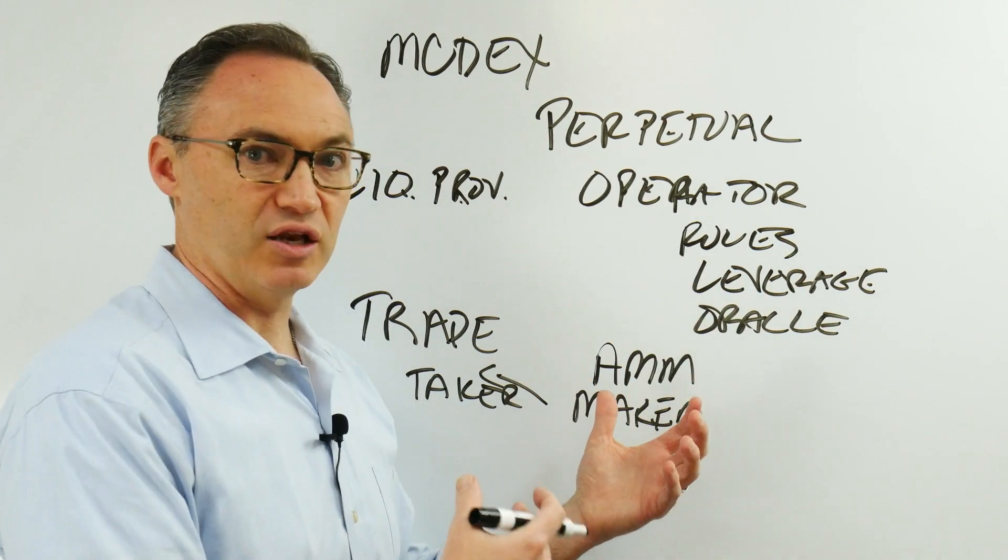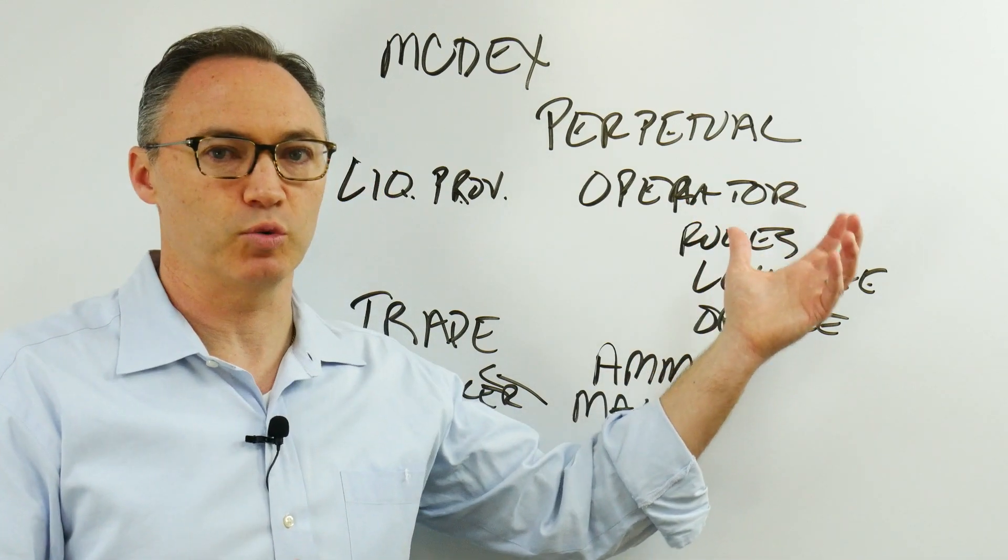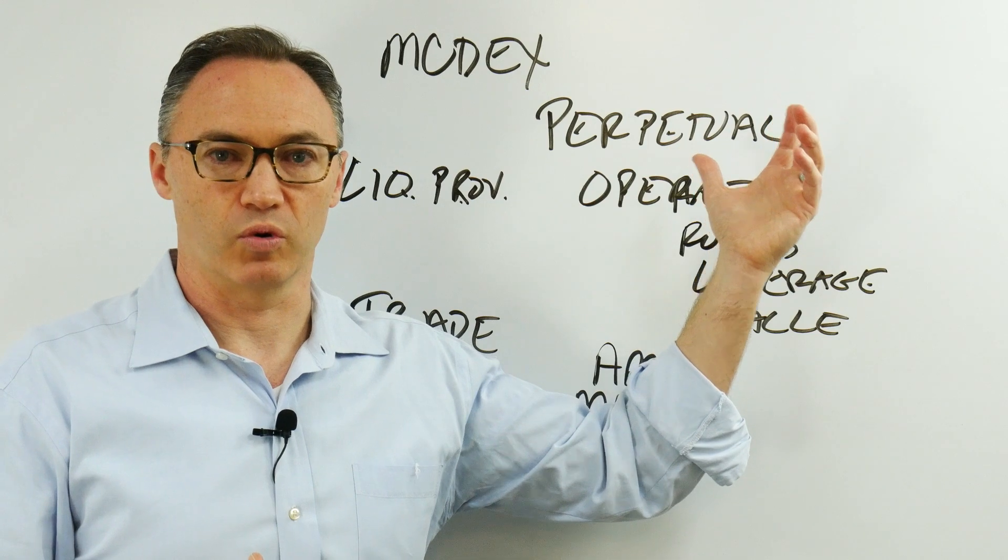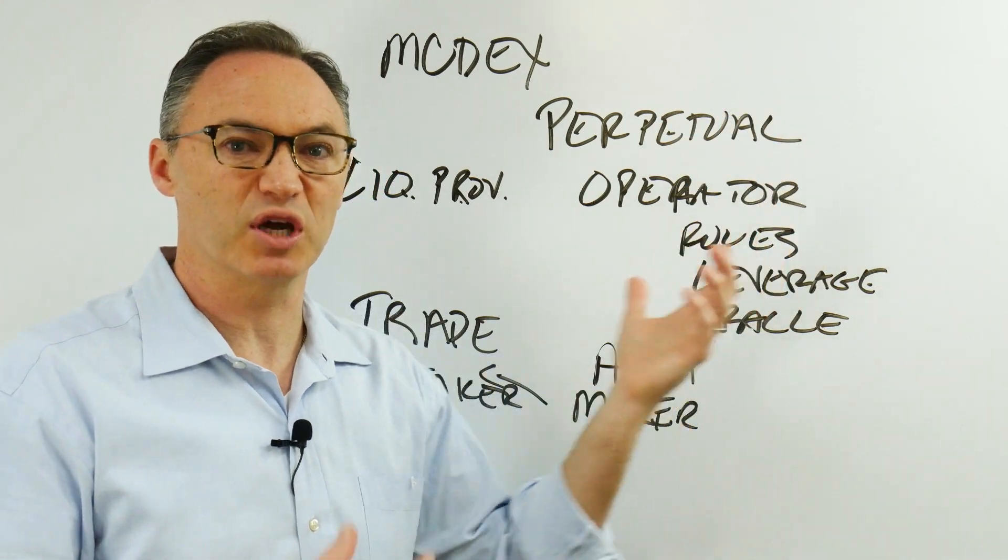Whether it's oil or Bitcoin or ETH or Tesla or whatever it might be, they can go trade it and they put ETH up as collateral.